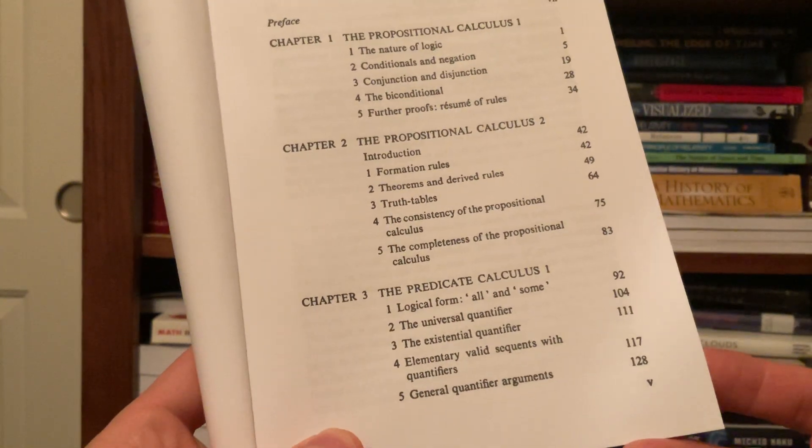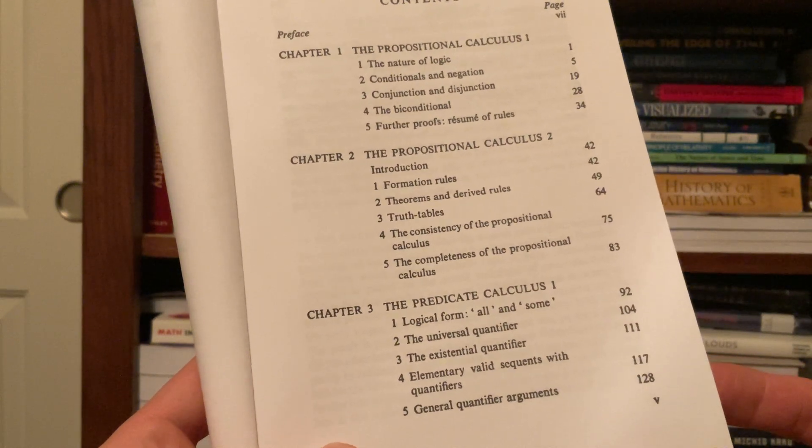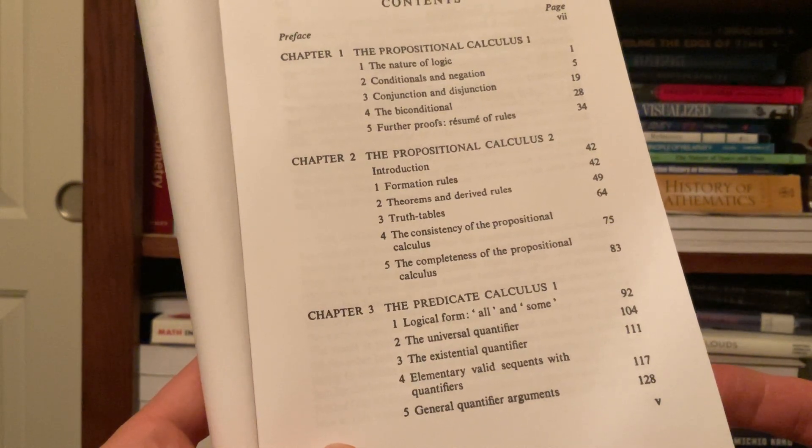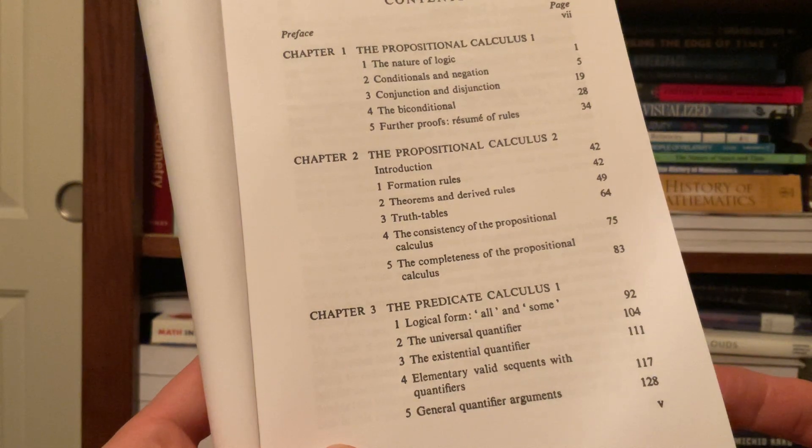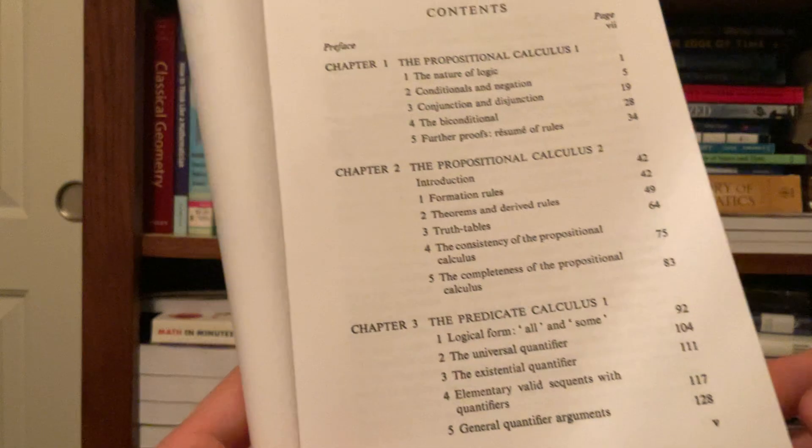Chapter 3, then you get into predicate calculus: logical forms, all and some, universal quantifier, existential quantifier, elementary valid sequences with quantifiers, general quantifier arguments.